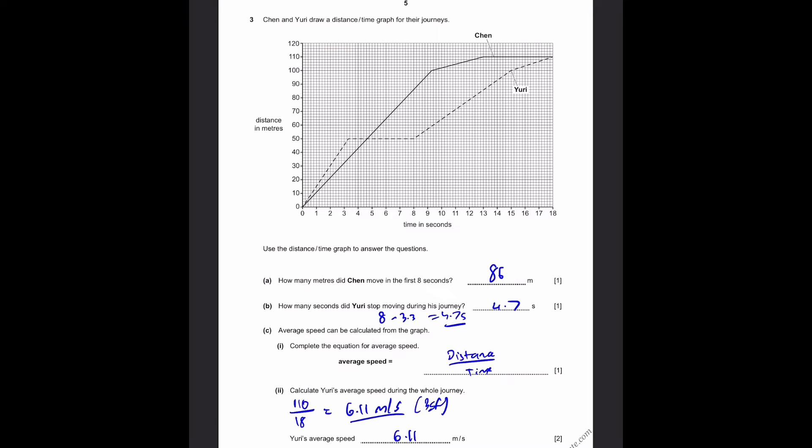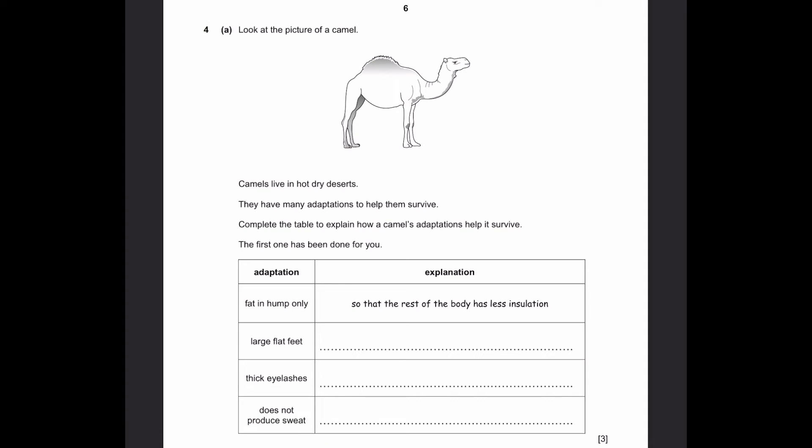Let's go to question 4. Part A: Look at the picture of a camel. Camels live in hot, dry deserts. They have many adaptations to help them survive. Complete the table to explain how a camel's adaptations help it survive. The first one has been done for you. So the adaptation is the fat in hump only explanation, so that the rest of the body has less insulation.